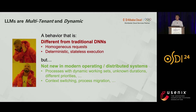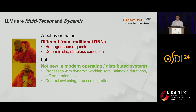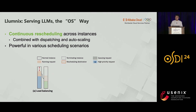In a nutshell, the major takeaway is that LLMs are inherently multi-tenant and dynamic, serving heterogeneous and unpredictable workloads on multiple instances. This behavior is quite different from traditional DNS, where requests are mostly homogeneous and execution is deterministic and stateless. But luckily, this behavior is not new in modern operating systems or distributed systems — we have context switching, process migration, and many other similar approaches to deal with multi-tenancy and dynamism. Our answer to this question is Lumnix, a system that features continuous rescheduling of LLM requests across multiple model instances.